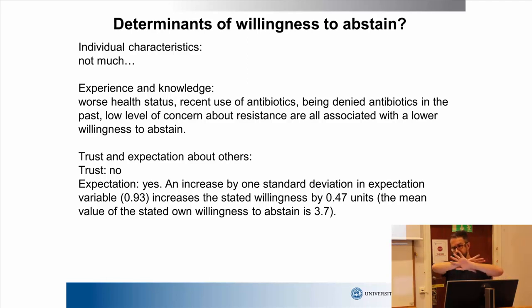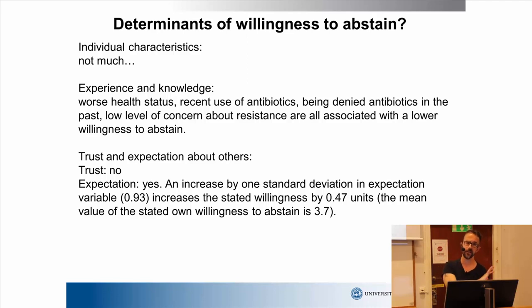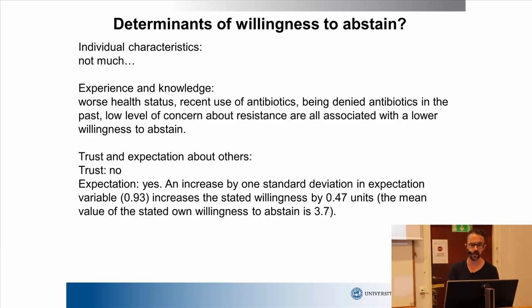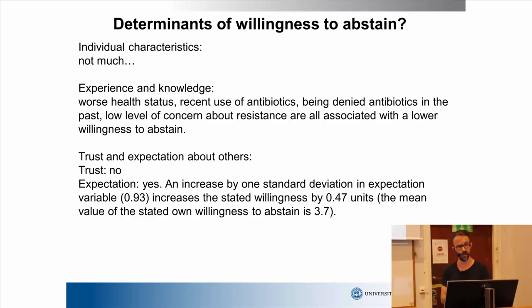When it comes to individual characteristics, there is essentially nothing that correlates with this — not gender, not income, not where they live, not their education. Basically nothing explains where they end up in their response. However, their previous experiences have a pretty big impact. Those with the worst health status, those who have recently taken antibiotics, those who have been denied antibiotics in the past, those with a low level of concern about resistance — all are associated with a lower willingness to abstain. All sorts of past behavior and knowledge correlate with this behavior.